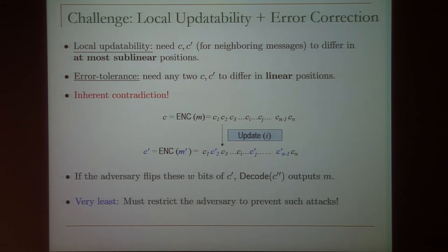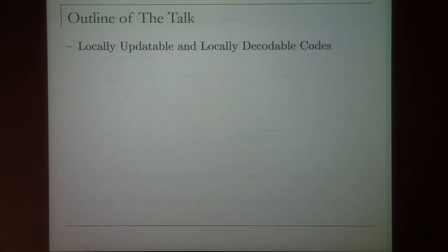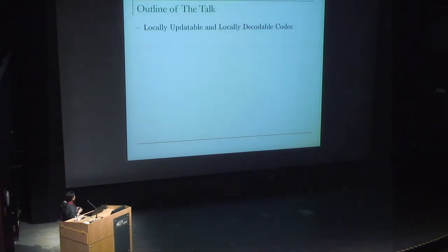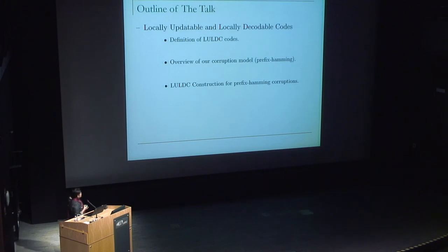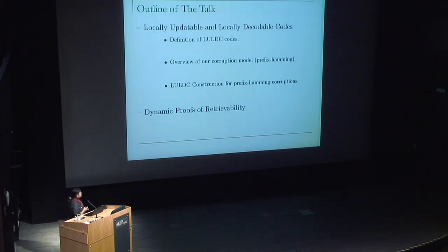The reason for this impossibility is that this is a very strong error model — we're allowing the adversary to do a lot. What we want to do is restrict the adversary to prevent such attacks, and that is what we're going to talk about today. Let me give you a quick outline: I'll start with the definition of an LULDC code, then give an overview of our corruption model, which we call the prefix Hamming metric, and give a construction of an LULDC code for the prefix Hamming metric, and finally a quick overview of how our proof of retrievability construction works.